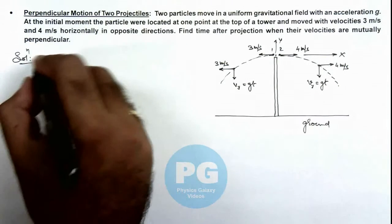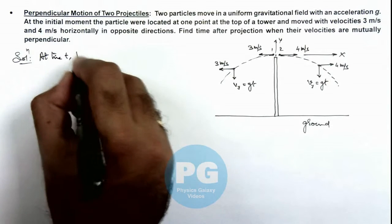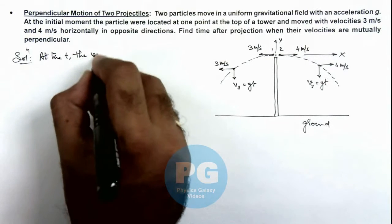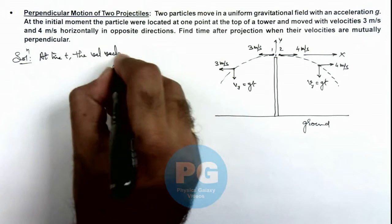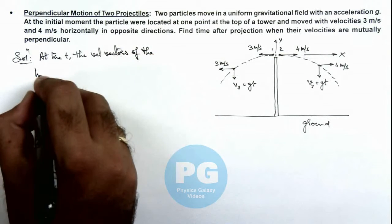So we can write at time t, the velocity vectors of the two particles are: